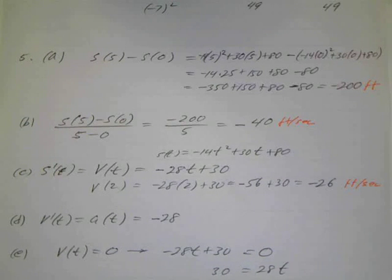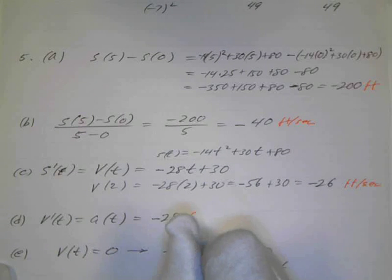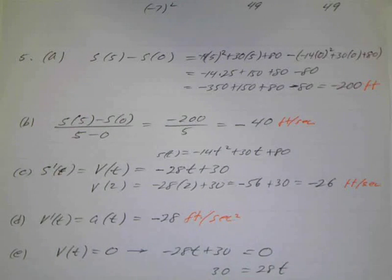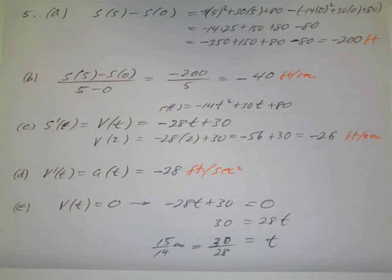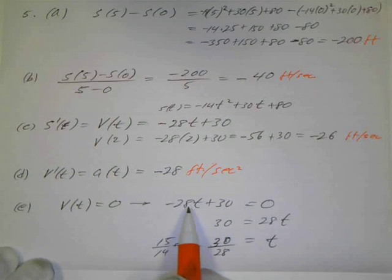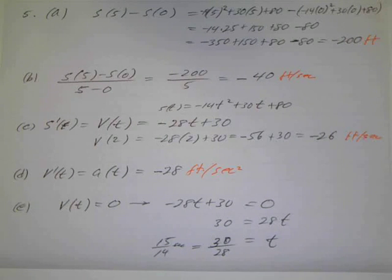The acceleration is the derivative of velocity, which is negative 28 feet per second squared — constant regardless of t. For when the particle changes direction, set velocity equal to 0: negative 28t plus 30 equals 0, so t equals 30 over 28, which reduces to 15 over 14 seconds.